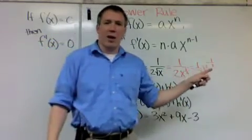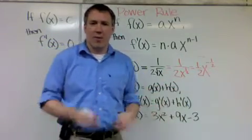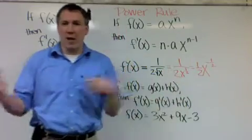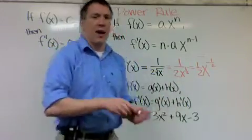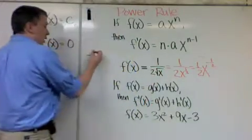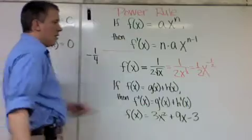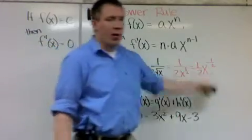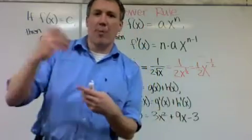So here is my power, negative 1 half, and I have 1 half in front. The power rule says multiply the power by the number in front. So negative 1 half times positive 1 half is negative 1 fourth. And then I put x. And then I drop the power by 1. Well, it's negative 1 half. If I drop it by 1, that's negative 1 and a half, negative 1.5.